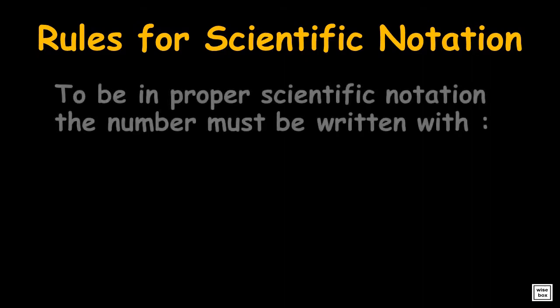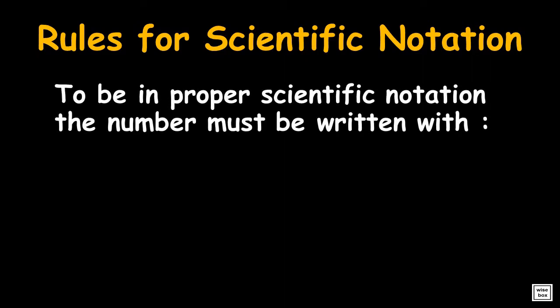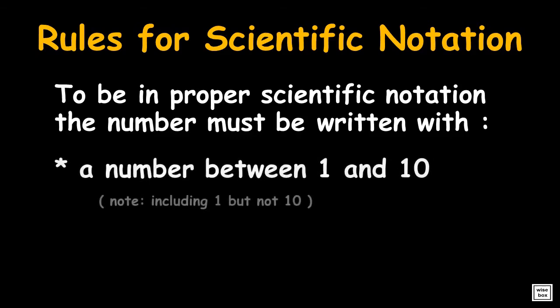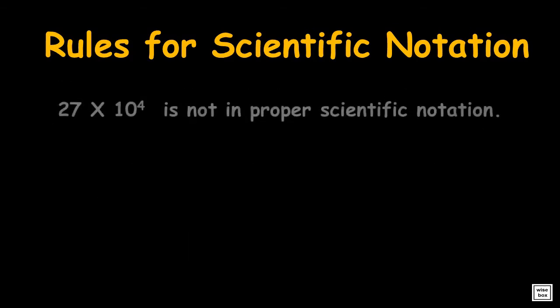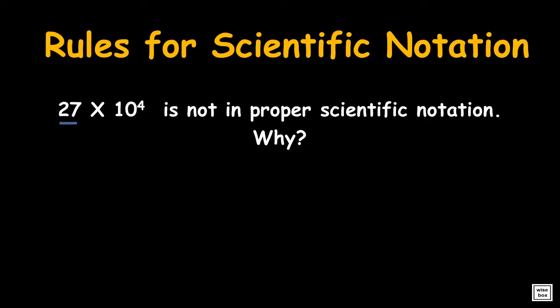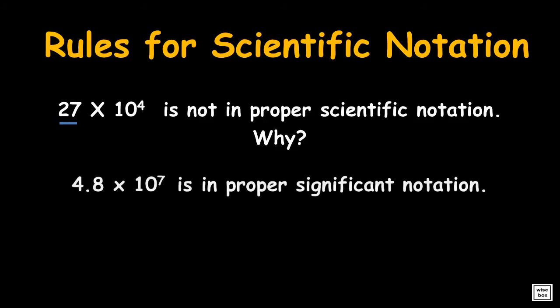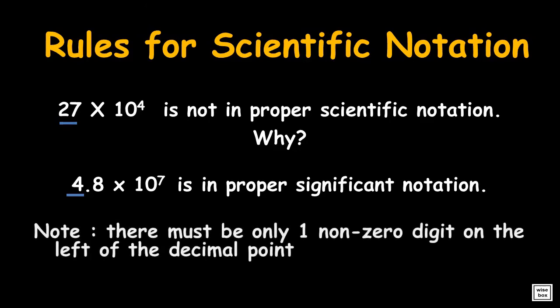To be in proper scientific notation, the number must be written with a number between 1 and 10. This number is not in proper scientific notation — why? The number 27 is not between 1 and 10. This is an example of a proper scientific notation: 4.8 is between 1 and 10. Also, note that there is only one non-zero digit before the decimal point.